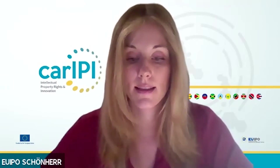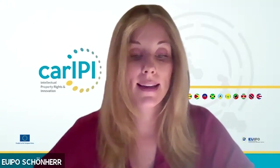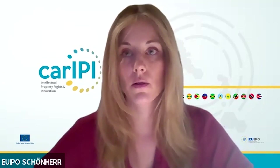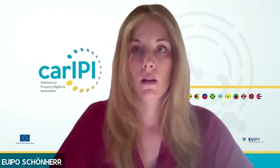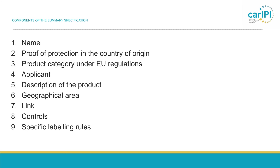Now let's move to the main part of the presentation on the components of the summary specification — the main elements that an application in the context of negotiations of a bilateral agreement has to contain. Eva and I will explain what the requirements for each element are and what the European Commission will check when assessing an application. There are in total nine main headings. First, the name — the name under which the product is marketed and which should be protected. As Monica just mentioned, what will be protected is the name.